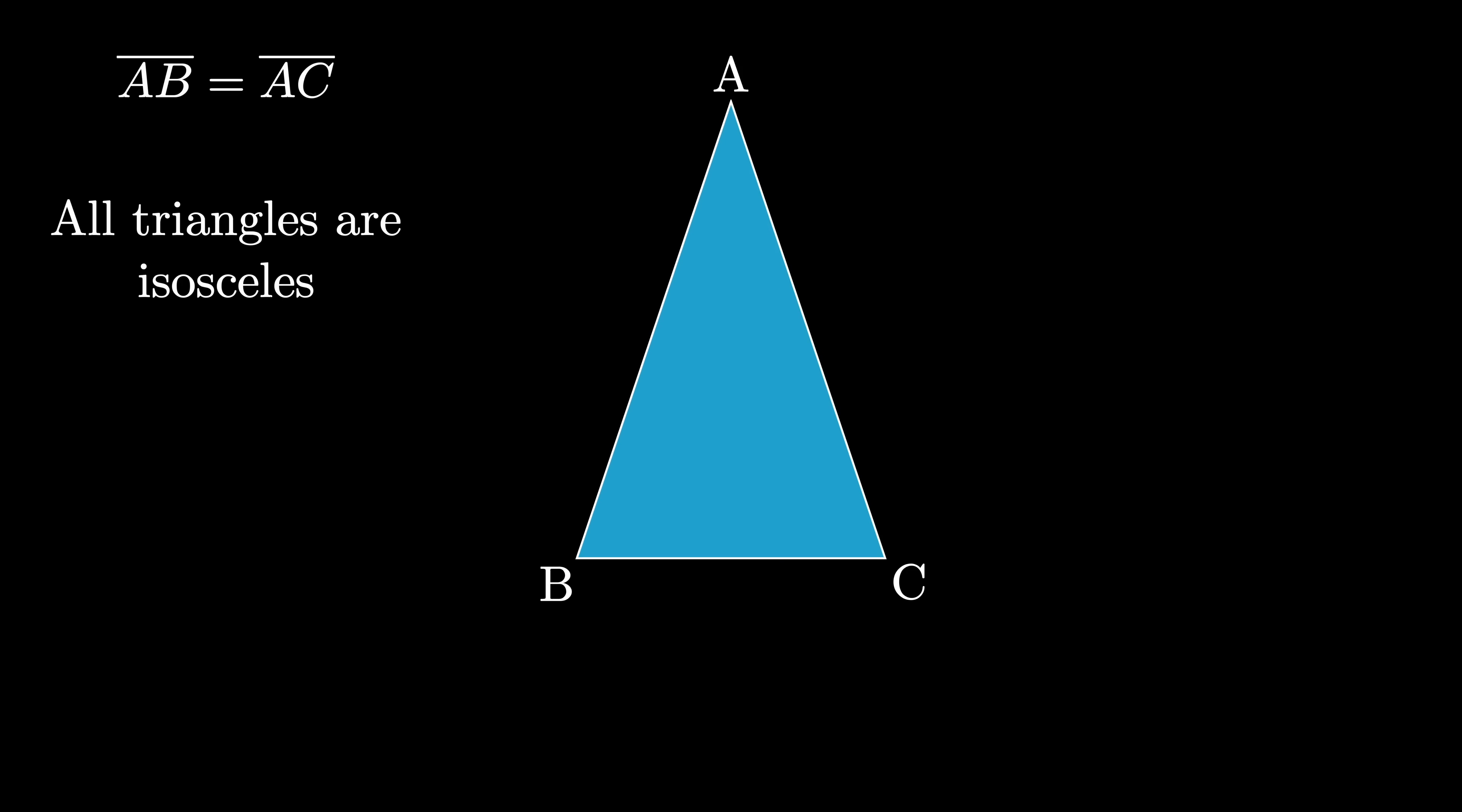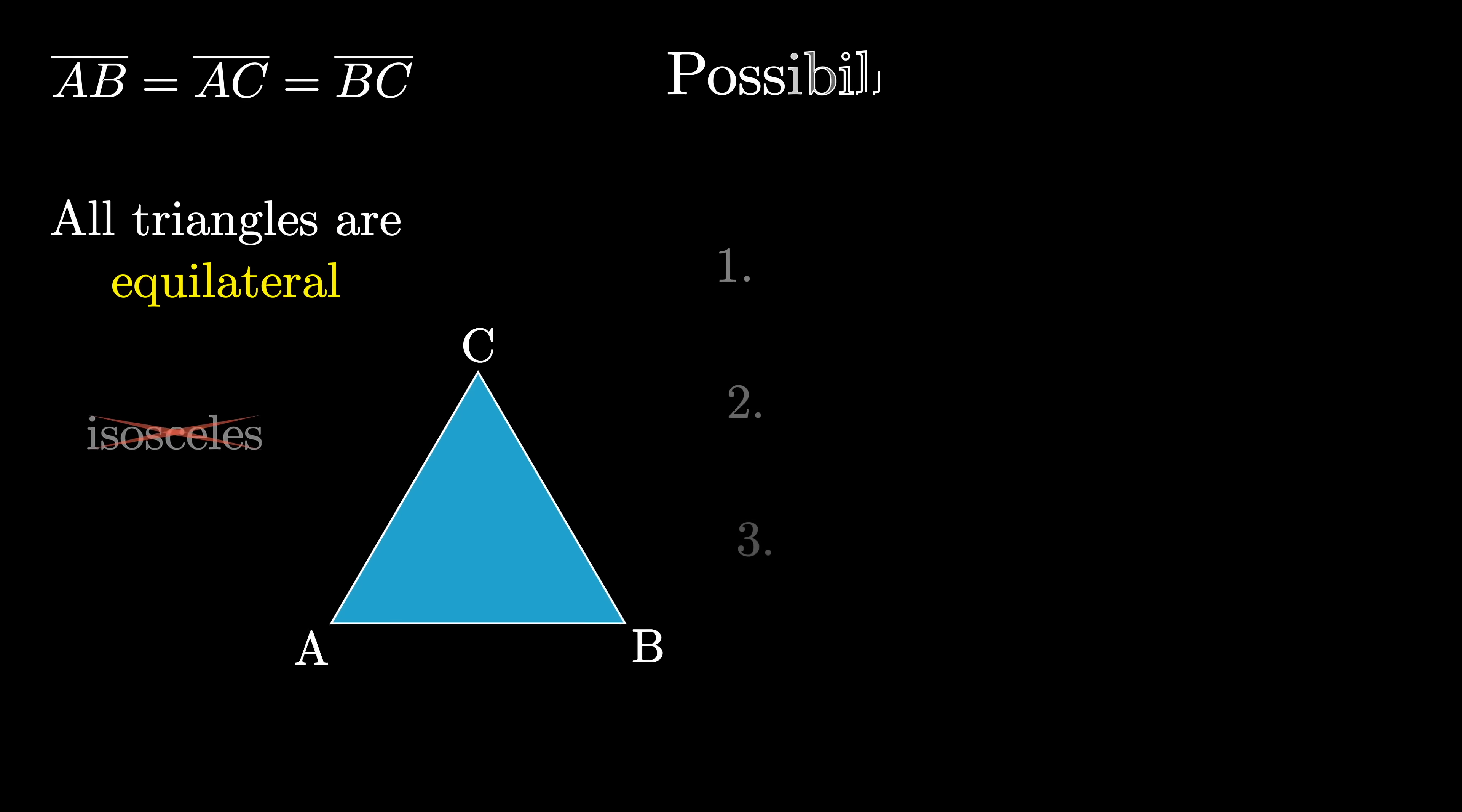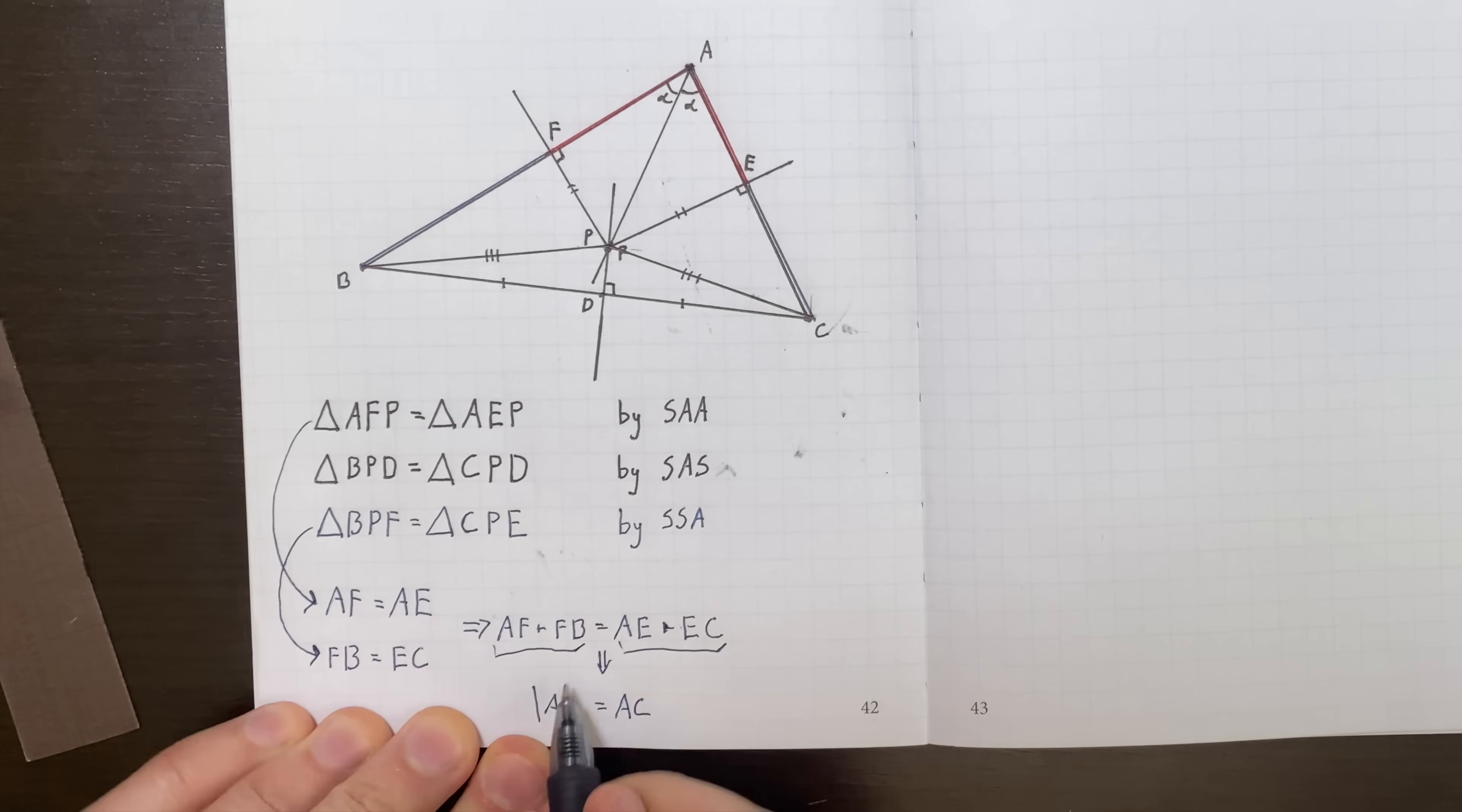And because we made no assumptions about the triangle, this implies that any triangle is isosceles. Actually, for that matter, since we made no assumptions about the specific two sides we chose, it implies that any triangle is equilateral. So this leaves us somewhat disturbingly with three different possibilities. All triangles really are equilateral. That's just the truth of the universe. Or you can use Euclid-style reasoning to derive false results. Or there's something wrong in the proof. But if there is, where exactly is it?